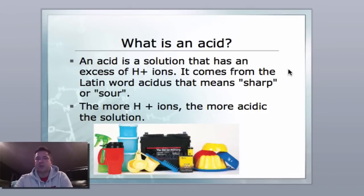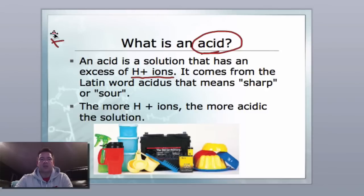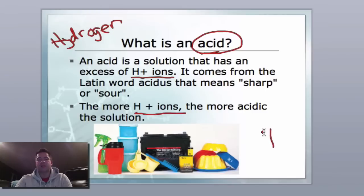The first thing we're going to talk about is what is an acid. I'm going to write this in red because I want you to remember acid is red. I'm going to talk about why in a bit. An acid is a solution that has an excess of these hydrogen ions represented by H+. It comes from the Latin word acidus which means sharp or sour. The more hydrogen ions we have, the more acidic. The acidity is going to be increased.